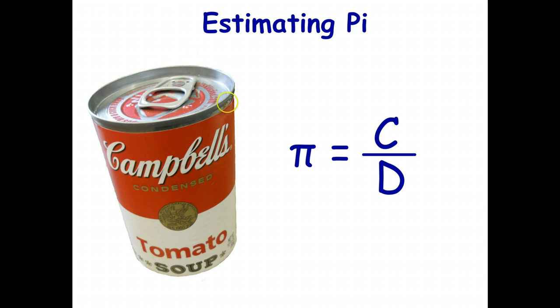you can measure the distance around with the string, hold it up to a ruler, and that gives you the length of the circumference. Then you just hold your ruler across the top of the can and that gives you the diameter. When you divide the circumference by the diameter, in every case, you get the same number if you measure perfectly accurately.